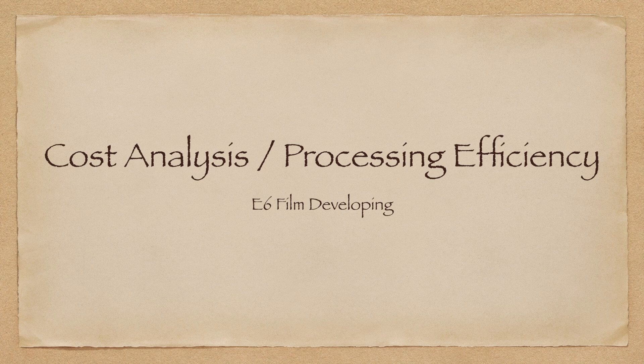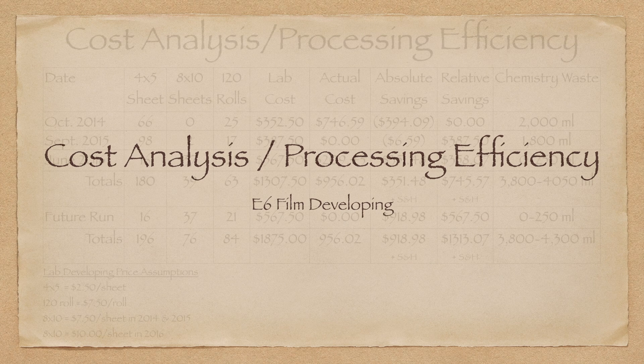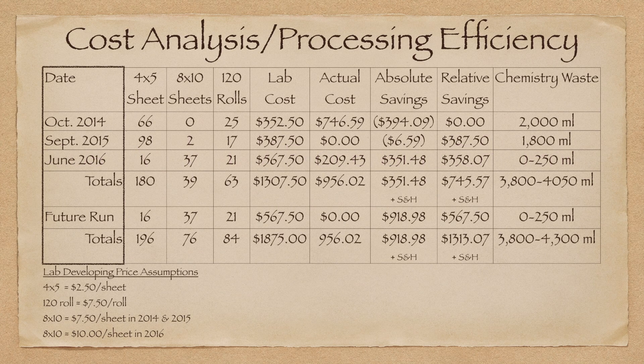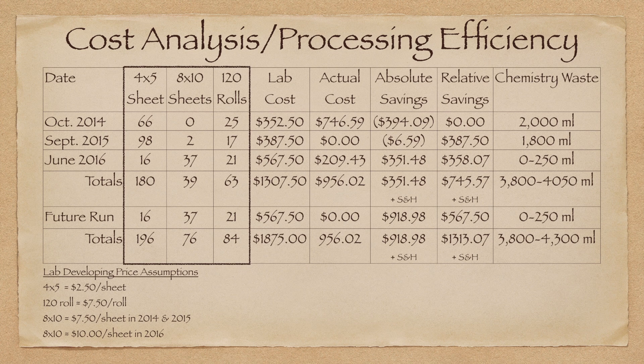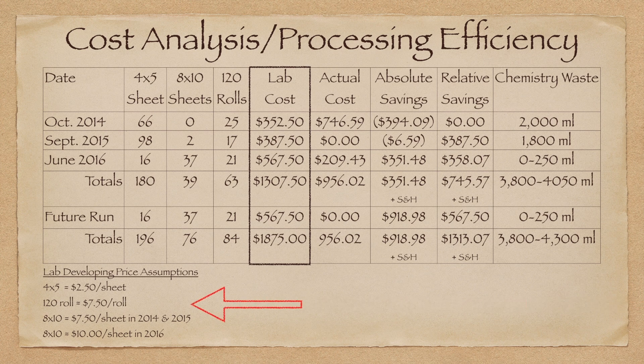Let's begin by taking a look at my cost analysis and processing efficiency. The first column in this table shows the three occasions that I developed my slide film, as well as a future run of the process. The next three columns show how much film I actually developed during each run, plus a projection of what I'm hoping to achieve during a future run. The next column shows the amount of money that it would have cost me to process the respective amount of film at a lab based upon the pricing you see below the table.